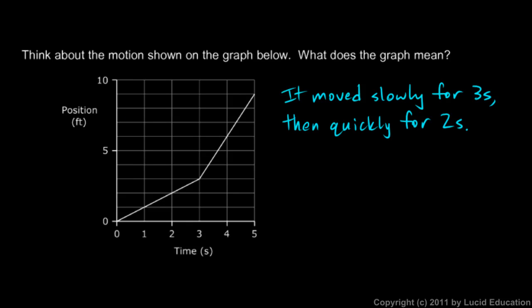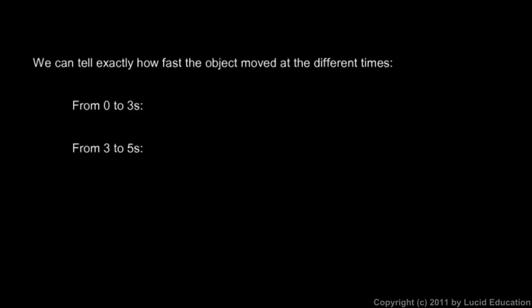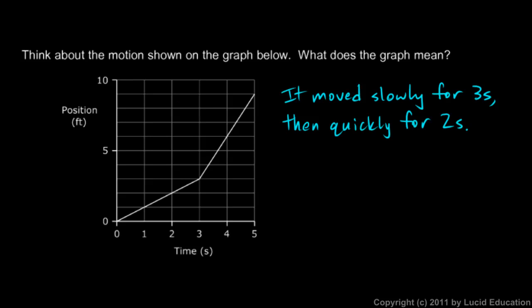We can use that to answer the questions below. We can tell exactly how fast the object moved at different times. From zero to three seconds, the average speed will be the distance divided by the time. Look at this point on the graph. At zero seconds it was at position zero, and at three seconds it was at position three. So the distance it moved during that time was three feet.